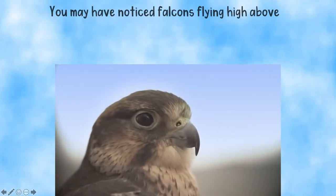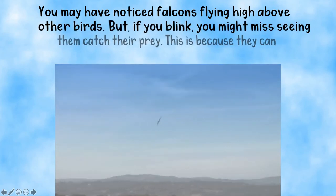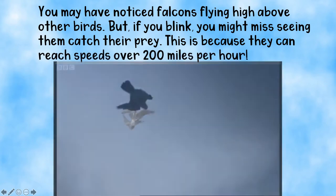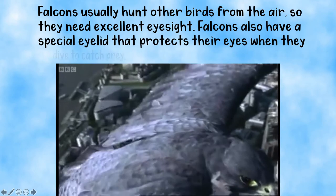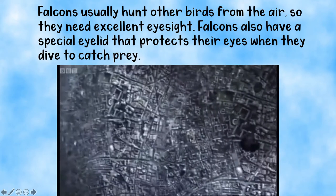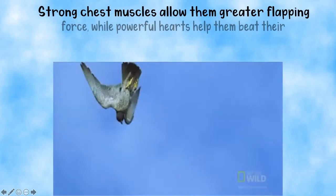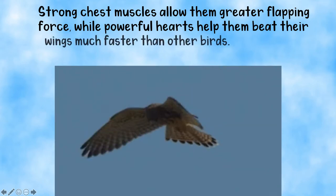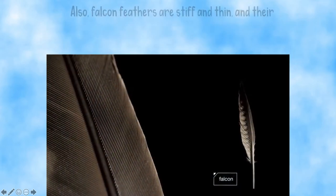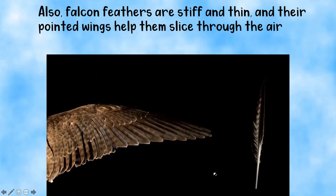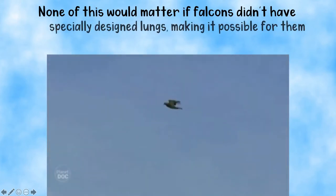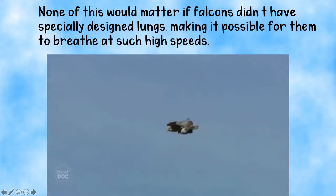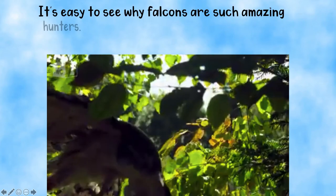You may have noticed falcons flying high above other birds, but if you blink, you might miss seeing them catch their prey. This is because they can reach speeds over 200 miles per hour. Falcons usually hunt other birds from the air, so they need excellent eyesight. Falcons also have a special eyelid that protects their eyes when they dive to catch prey. Strong chest muscles allow them greater flapping force, while powerful hearts help them beat their wings much faster than other birds. Also, falcon feathers are stiff and thin, and their pointed wings help them slice through the air quickly. None of this would matter if falcons didn't have specially designed lungs, making it possible for them to breathe at such high speeds. It's easy to see why falcons are such amazing hunters.